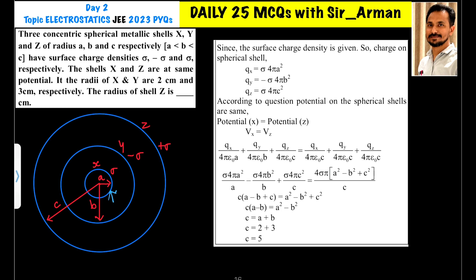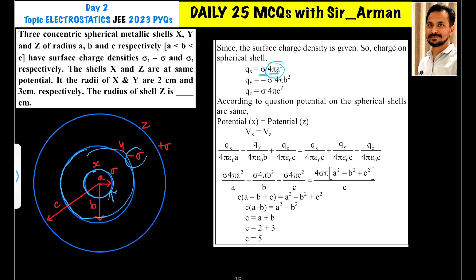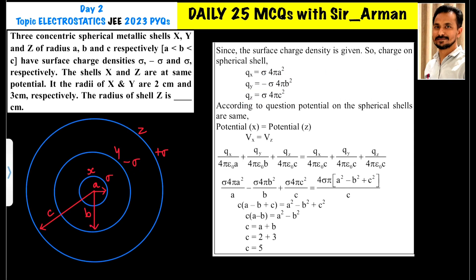Since surface charge densities are given, we can find the charge on each shell. The charge on X is Q_x = sigma times its surface area, which is 4π a squared. The charge on shell Y is Q_y = minus sigma times 4π b squared, since its surface charge density is minus sigma. Similarly, Q_z = sigma times 4π c squared for shell Z.